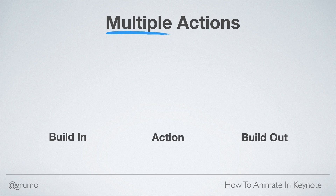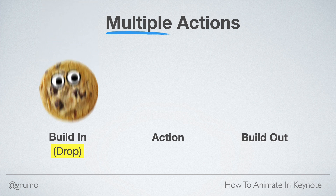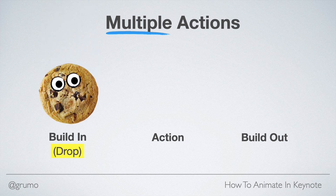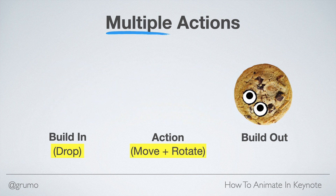Now we're going to learn how to apply multiple actions to the same object. Objects can only have one build-in animation and one build-out animation, but they can have multiple actions applied to them. So in this case, the cookie is going to drop as the build-in. For the action, it's going to move and rotate at the same time. And for the build-out, it's going to burn.